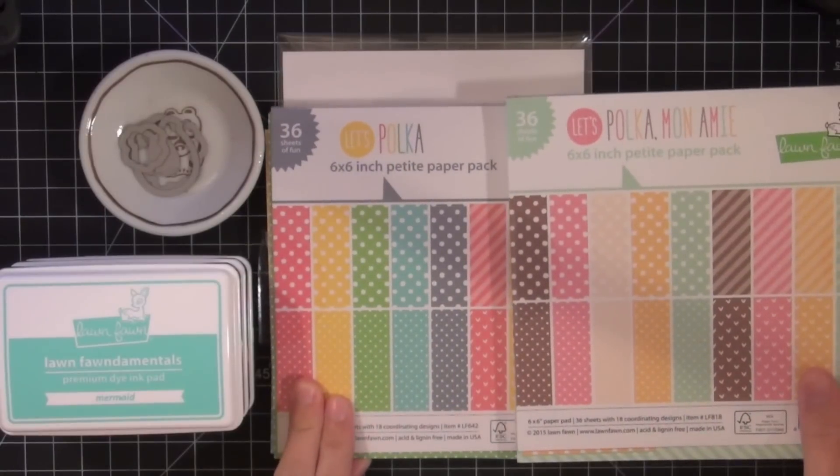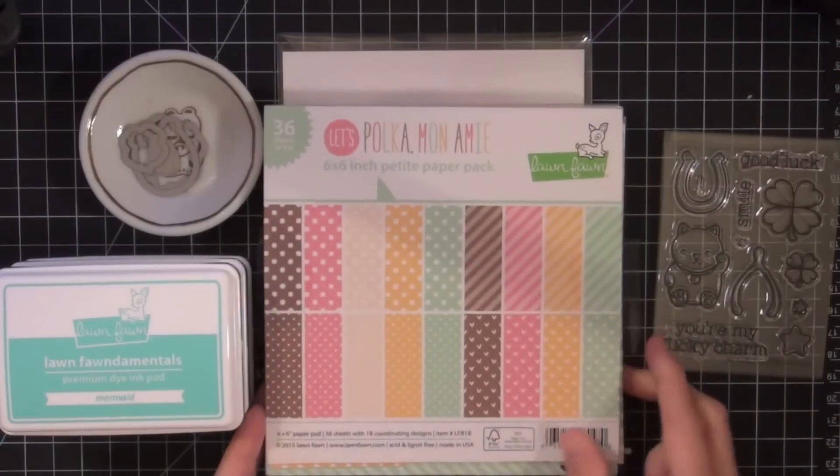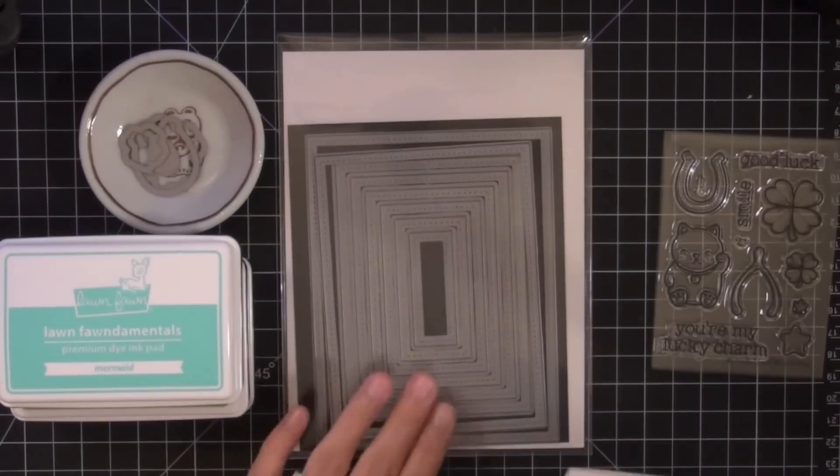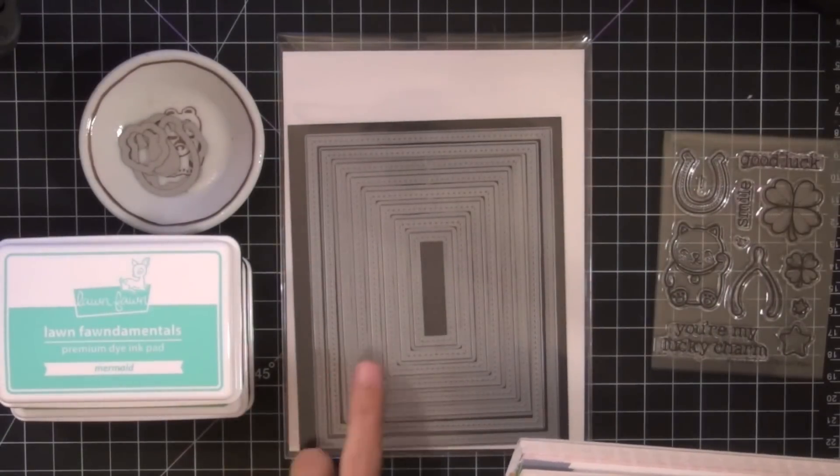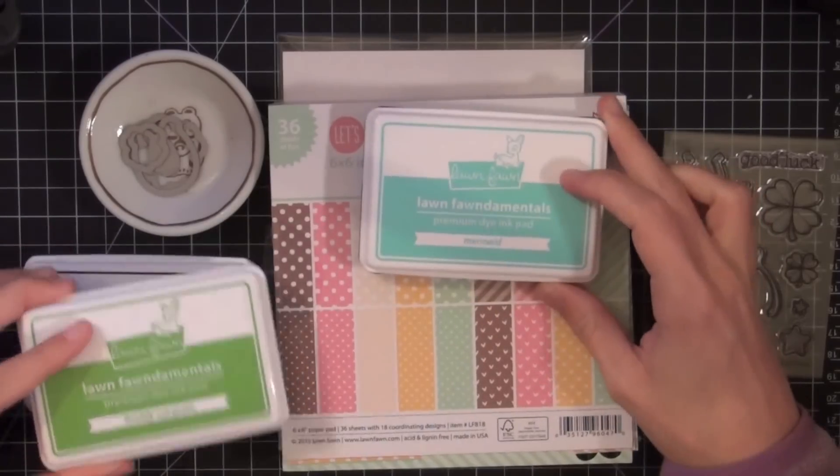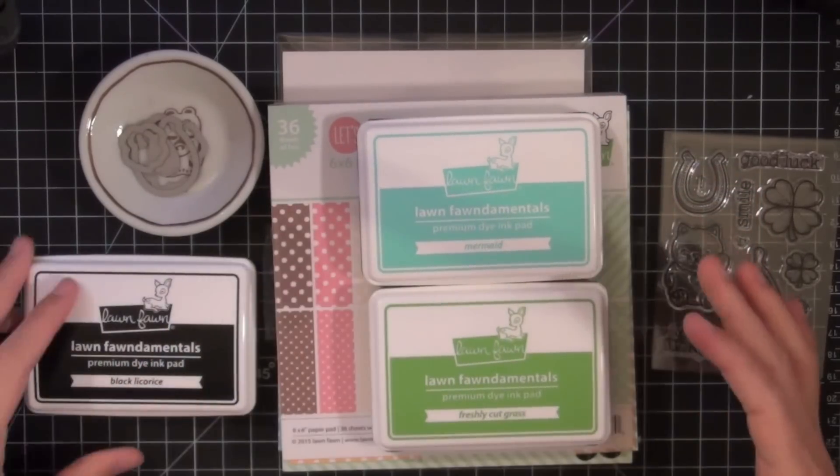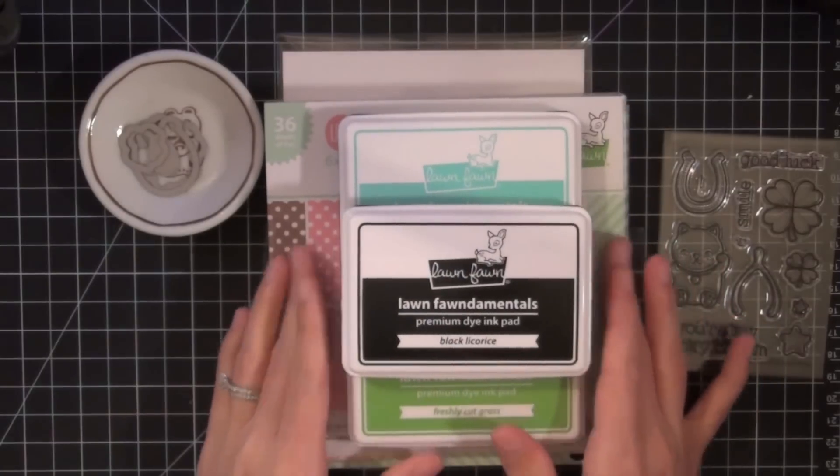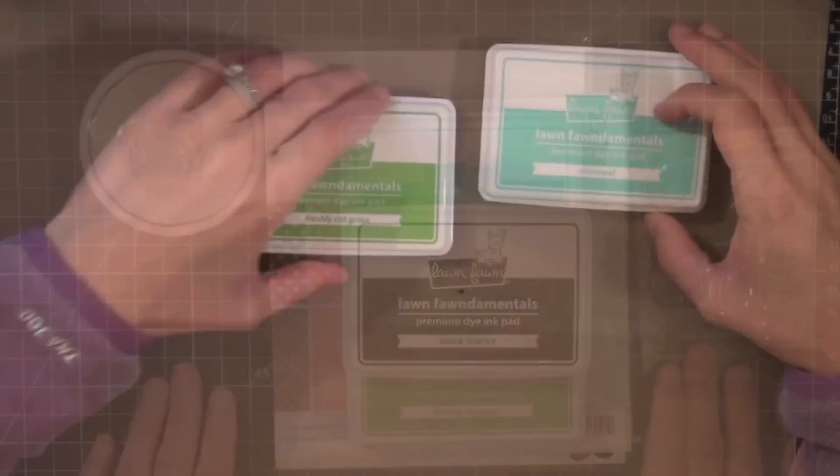The coordinating dies, the Let's Polka and Let's Polka in the Meadow paper pads. I'll be using several patterns out of each paper pack. I'll be using the stitch rectangle dies, several of those dies to create a little bit of extra detail on the card, and several of the new Lawn Fawn inks.